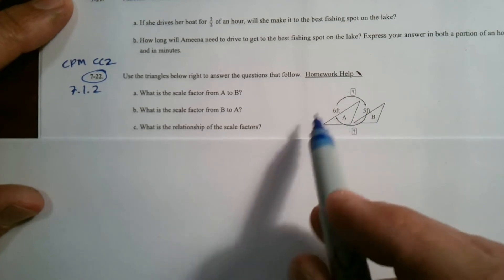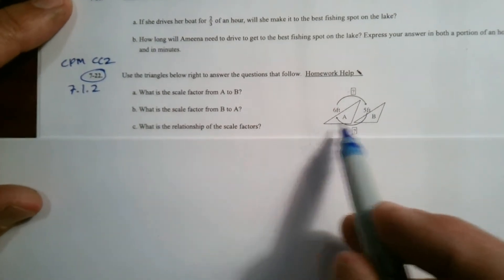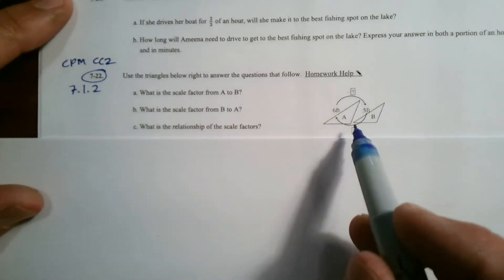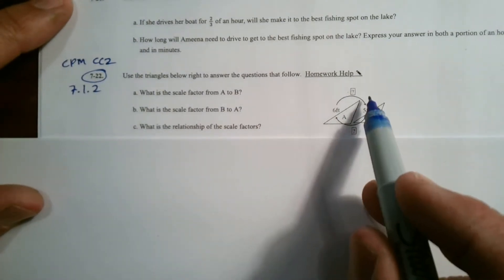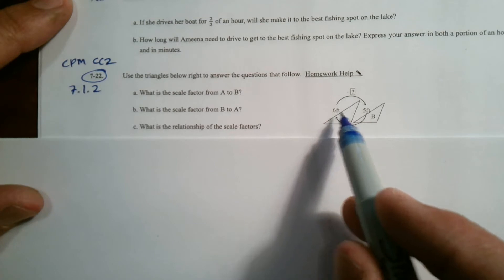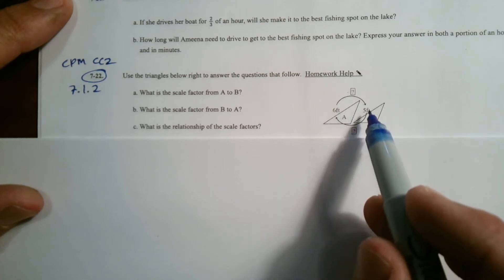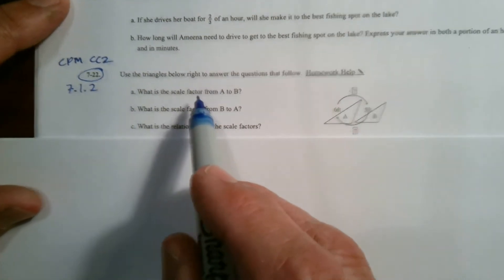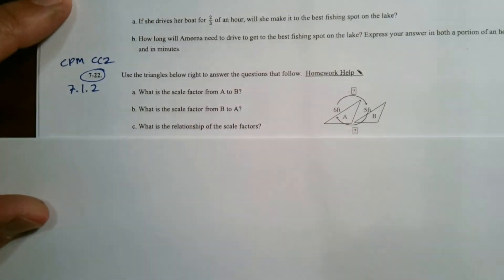Here's our triangles. Notice we've got triangle A and triangle B. We've got a couple corresponding sides that are labeled. The side here is 6, that long side there is 5. Part A says, what is the scale factor from A to B?